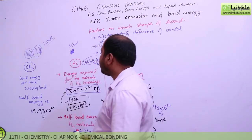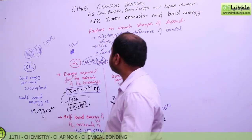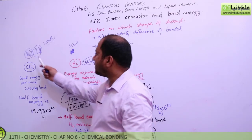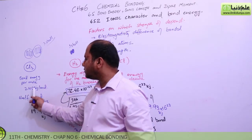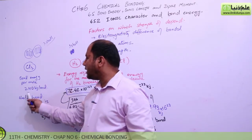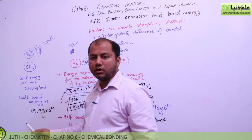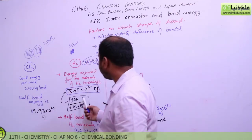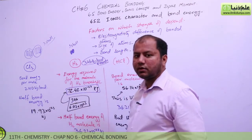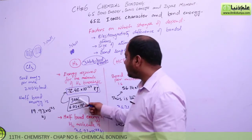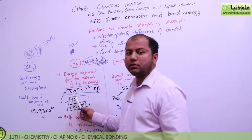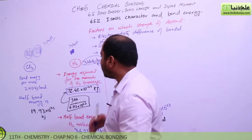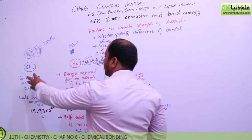Regarding the size of atoms: when you look at a big atom, the energy required to break the bond is very low. Here you can see the energy release. This is why the size of atoms is a factor in bond energy.